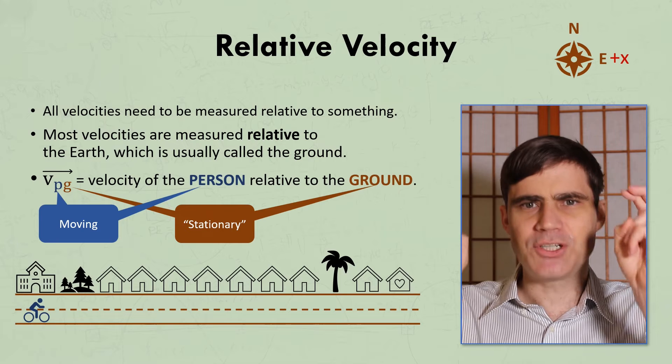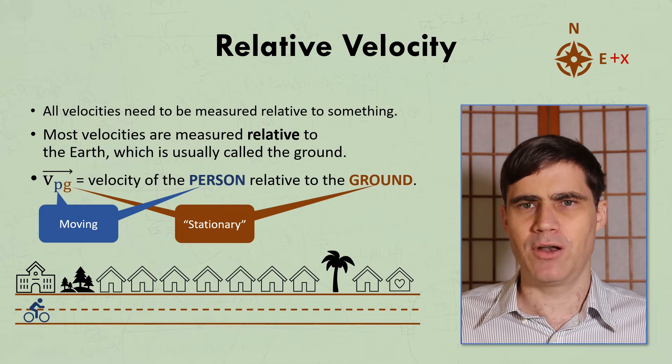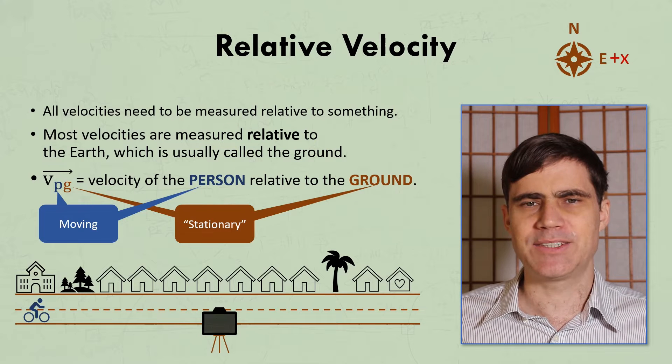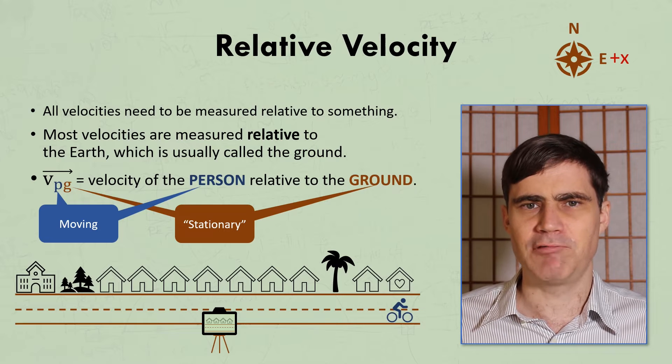I like to think of the stationary one as being where a camera would need to be placed in order to video what we're modeling in the problem. So in order to film the student riding past their houses at 5 metres per second east, the camera would just need to be attached to the ground.